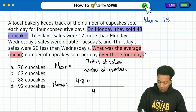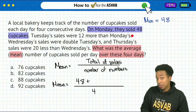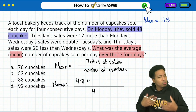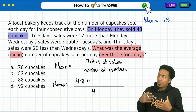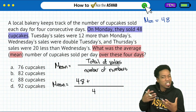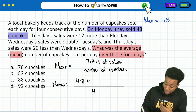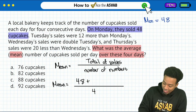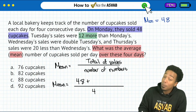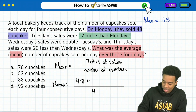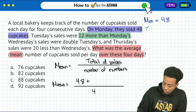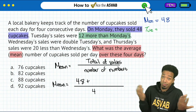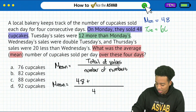So let's check out Tuesday. Tuesday sales were 12 more than Monday's. So we're not putting 12 for Tuesday. There are going to be folks out there with test anxiety who might see that 12 and want to just throw it in, but that's not what we should do. Read it carefully — it says that Tuesday sales were 12 more than Monday's. So what's 12 more than Monday? Monday was 48, and 48 plus 12 is 60. So we'll put 60 right there.